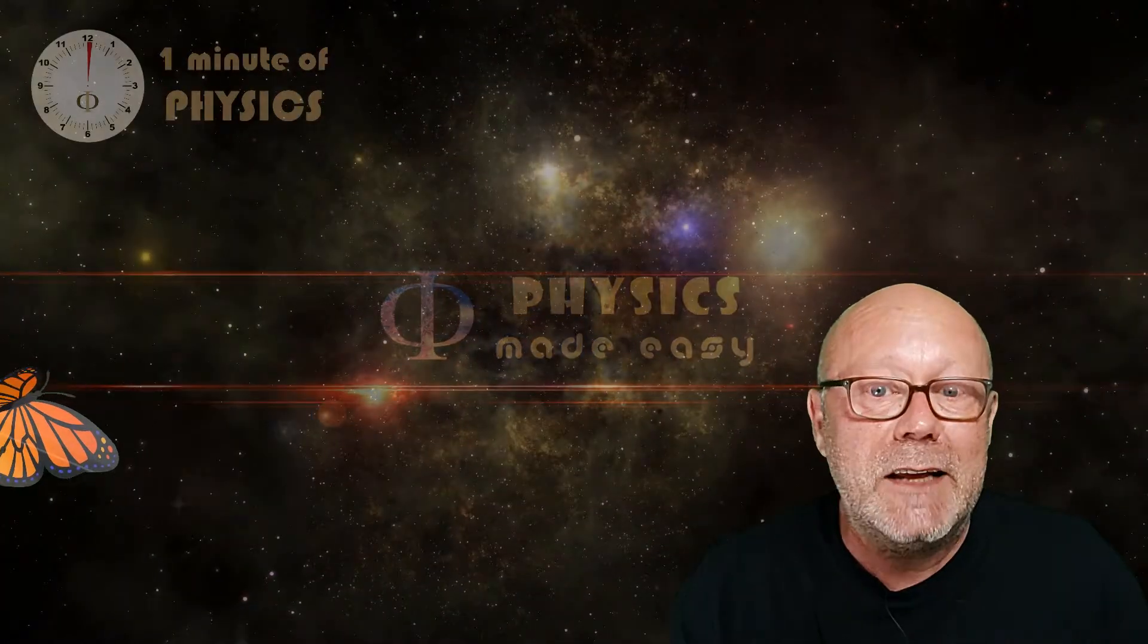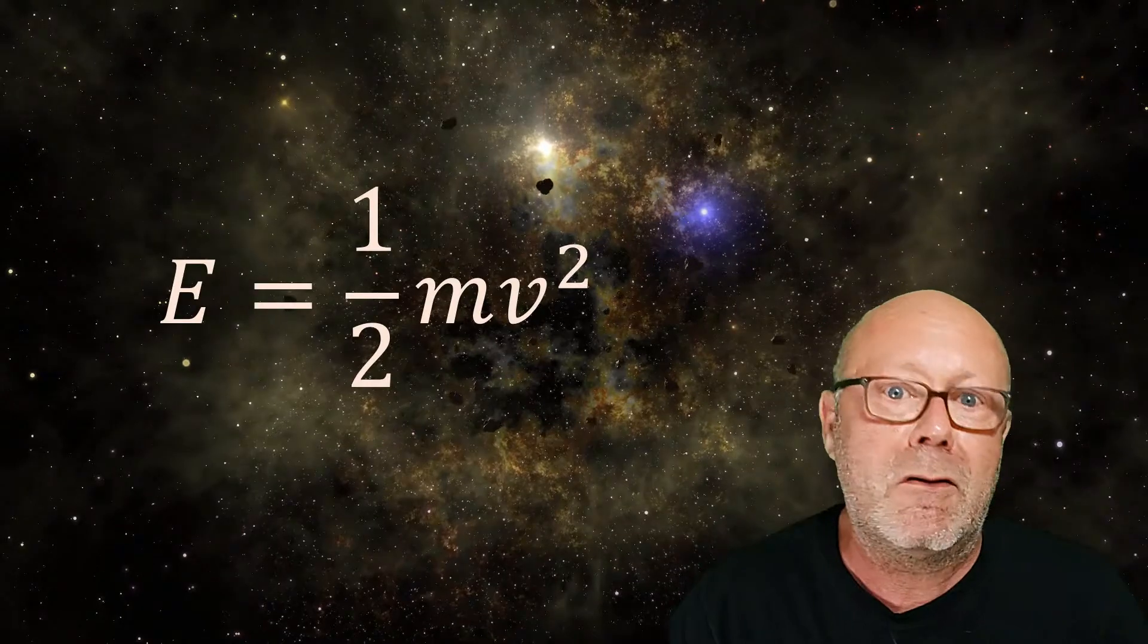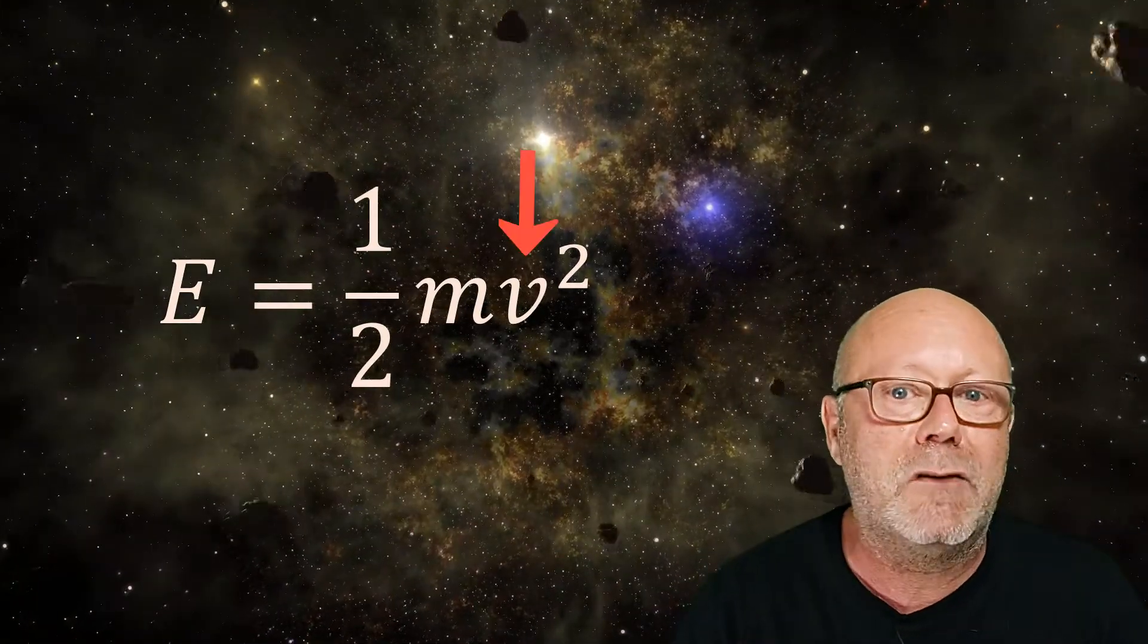An object in motion is said to have kinetic energy because kinetic energy is the energy of motion. So when you see something moving, you're actually seeing energy. Kinetic energy depends on the mass of the object and the speed of the object.